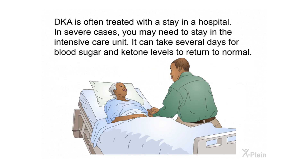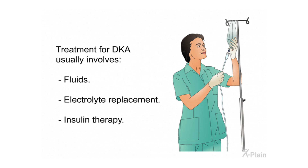Treatment. DKA is often treated with a stay in the hospital. In severe cases, you may need to stay in the intensive care unit. It can take several days for blood sugar and ketone levels to return to normal. Treatment for DKA usually involves fluids, electrolyte replacement, and insulin therapy.